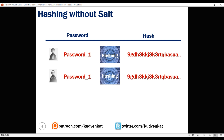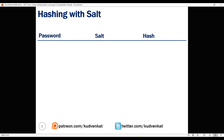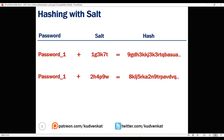An attacker can hash random passwords and then compare the hashes to crack the password. The better approach is to use random salt. When a random salt is added to the hashing process, the generated hash will not be the same even if the plain text passwords are identical.